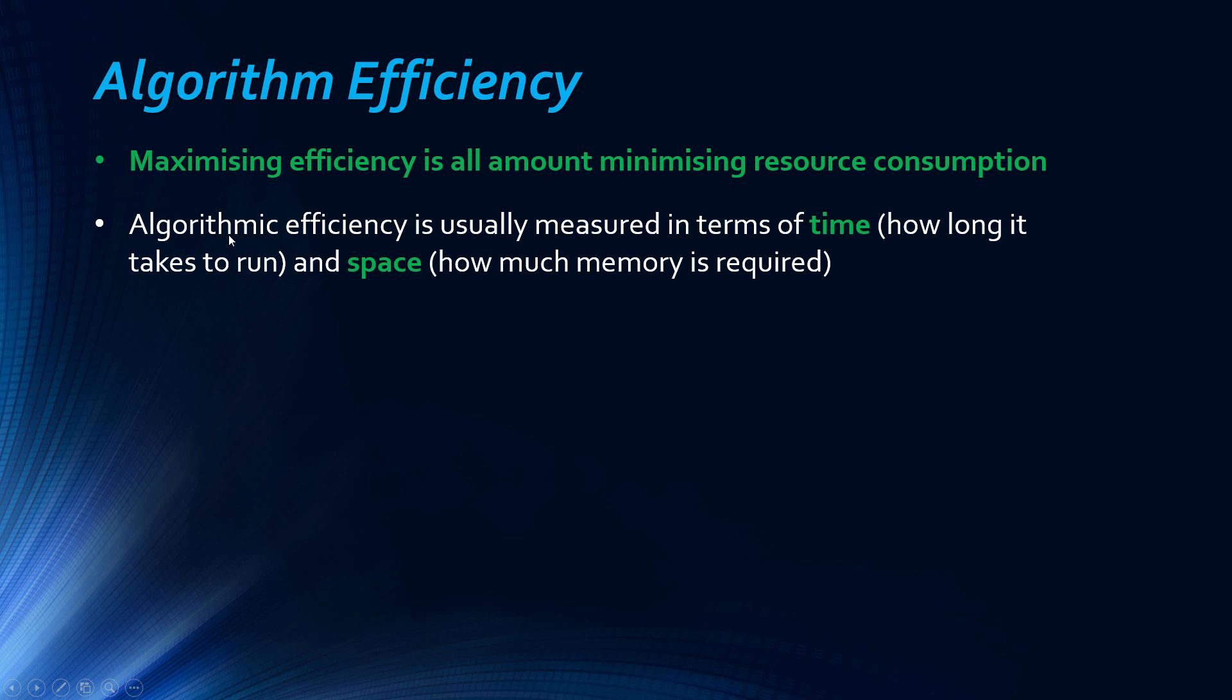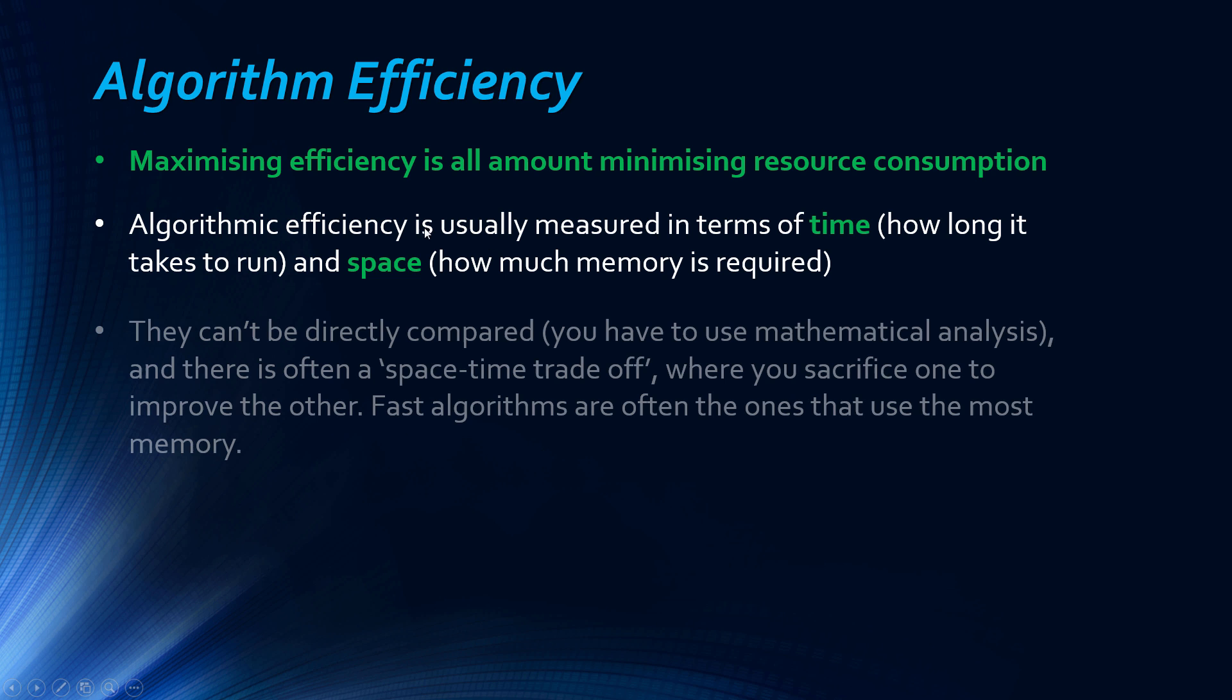So we now finally look at algorithm efficiency. And really, this is, you can't really talk too much at GCSE level, because you're not talking about things called complexities. Complexities is what makes algorithms slightly more interesting to learn about. But that's at possibly A level, and then university. So maximizing efficiency is all about minimizing resource consumption. That's just what efficiency is. You would have probably covered in physics too. So what we tend to measure it in, in terms of time, how long it takes to run, and space, how much memory is going to be used. There's other measures of efficiency, depending on the purpose, but those are the two main ones we talk about, at least theoretically. And they can't be directly compared, right, because they're two different quantities. You can't directly compare them, so you have to use mathematical analysis, which is the complexities I'm talking about.